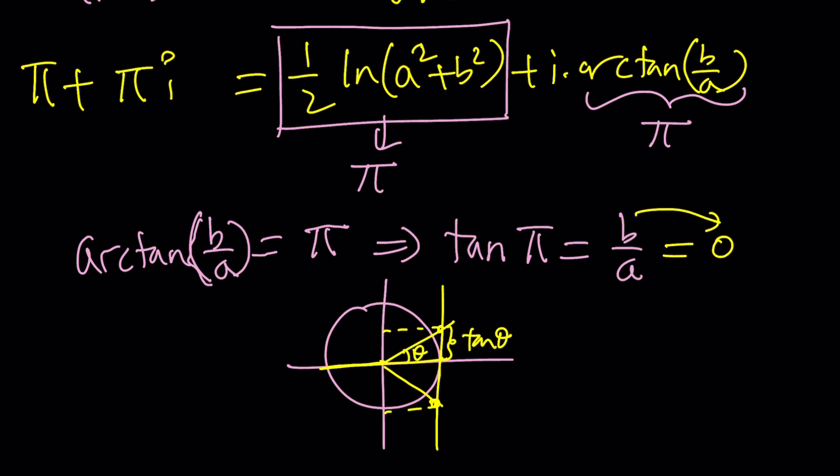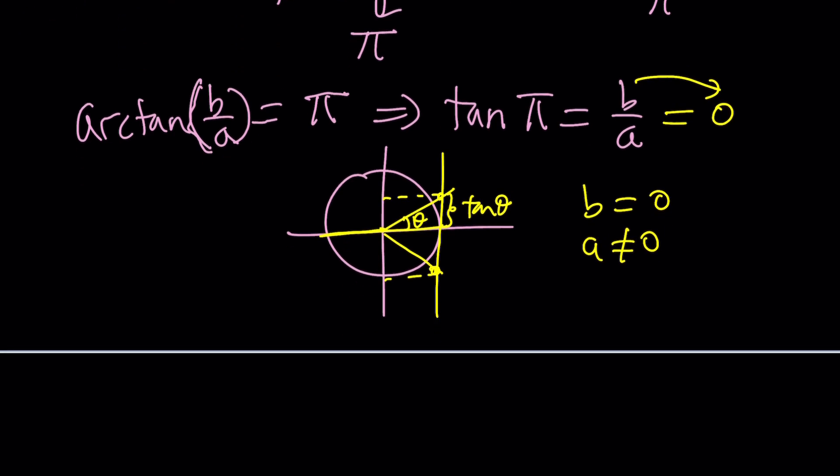This means b = 0. And of course, a should not be zero, right? Because 0/0 is not zero. Zero to the power of zero is one, by the way. But anyways, that's a different discussion. So b = 0.